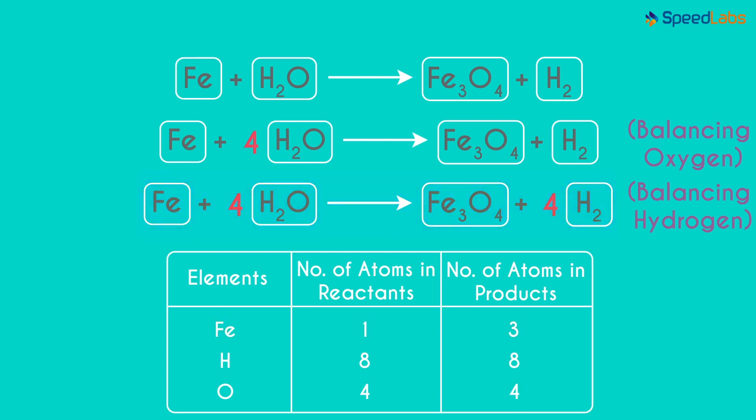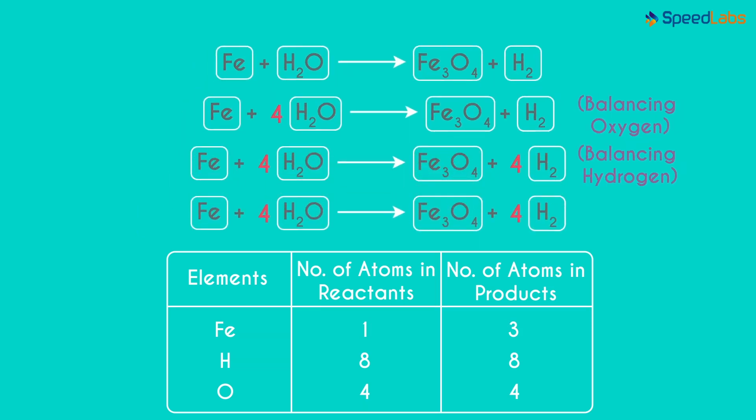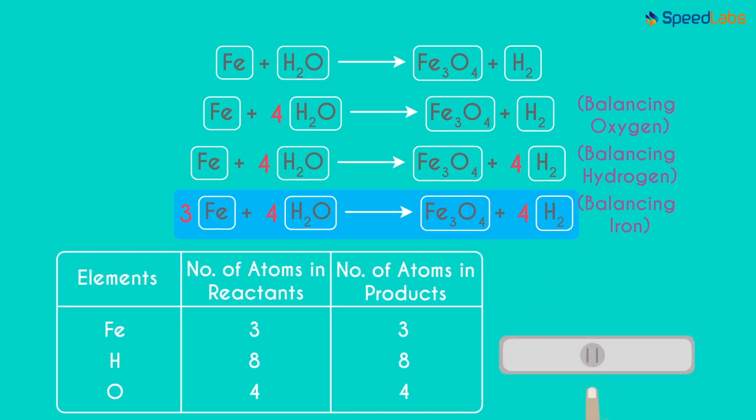So to equalize the Fe atoms, we multiply Fe on the left with 3. Is the equation balanced now? Yes, it is.